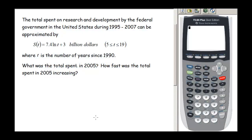In this video we're going to look at a couple of applications where we have logarithmic or exponential functions. The total spent on research and development by the federal government in the United States during 1995 to 2007 can be approximated by the function S of t equals 7.4 natural log of t plus 3.